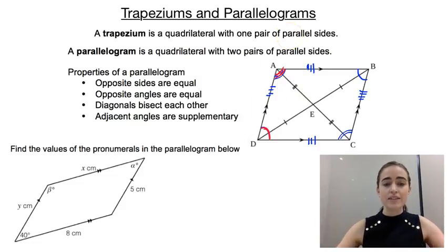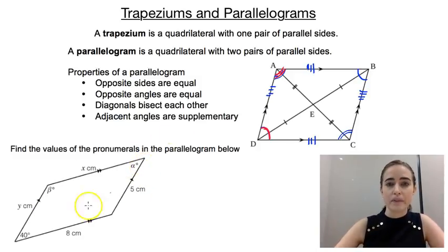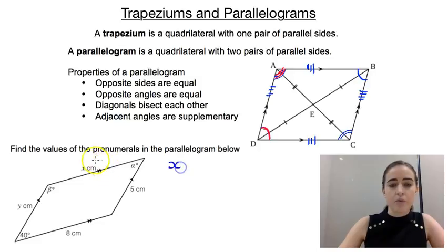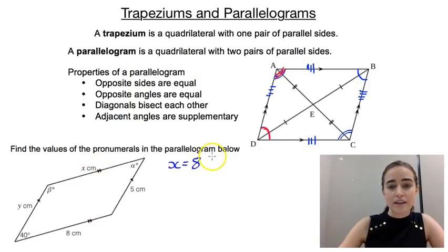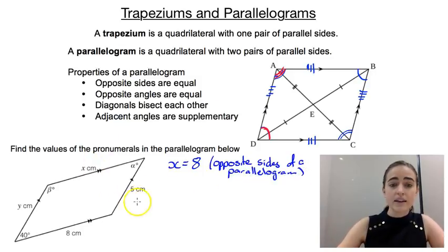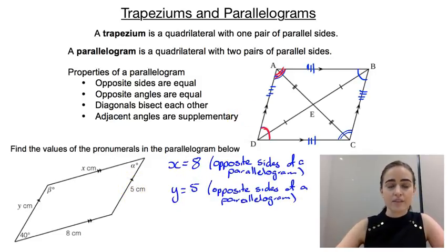We have an example that asks us to find the values of the pronumerals in this parallelogram. Starting with the sides — x is equal to 8, and the reason is that they're opposite sides in a parallelogram. Our next side, y, would be equal to 5, and the reason is exactly the same. So that's our sides done.